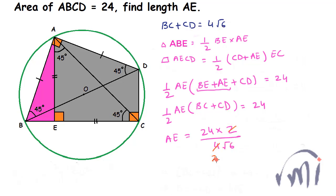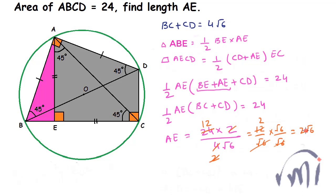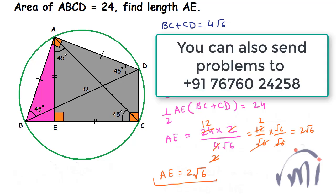So AE equals 24 times 2 divided by BC plus CD. Since BC plus CD equals 4 root 6, we get AE equals 48 divided by 4 root 6, which is 12 divided by root 6. Multiplying numerator and denominator by root 6 gives 12 root 6 divided by 6, which equals 2 root 6. So the length AE is equal to 2 times the square root of 6.